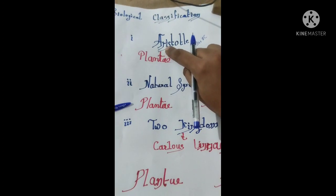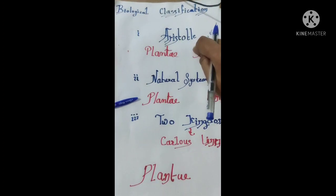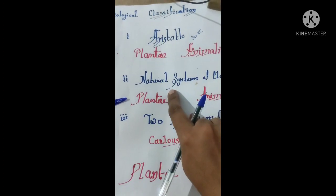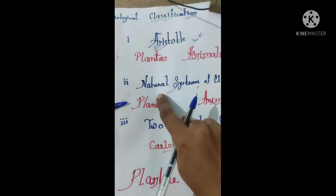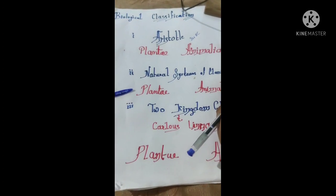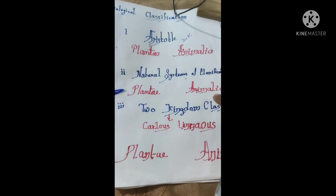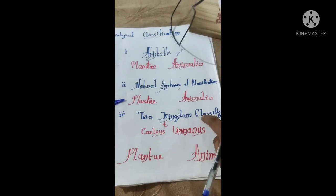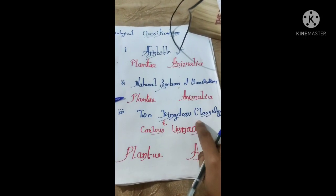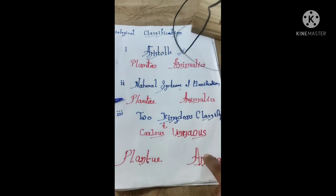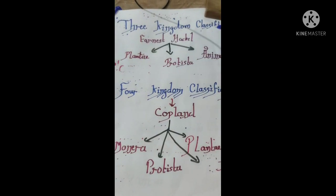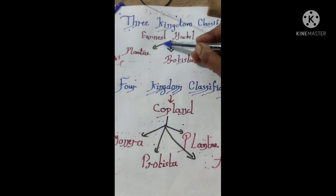Number one: artificial system of classification. Number two: natural system of classification — that was also having Plantae and Animalia, two-kingdom classification, given by Carlos Linnaeus: Plantae and Animalia again.